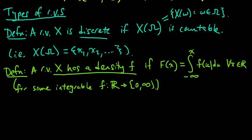Just to mention a couple of examples: a quick example of a discrete random variable would be the number of heads in five coin flips. And an example of a random variable with a density would be the length of the lifetime of a lightbulb. We could define a random variable with a density to model that.